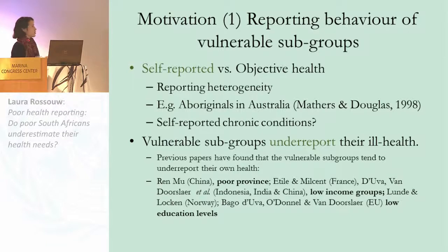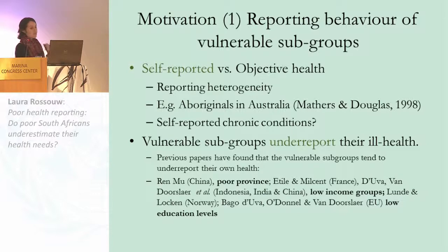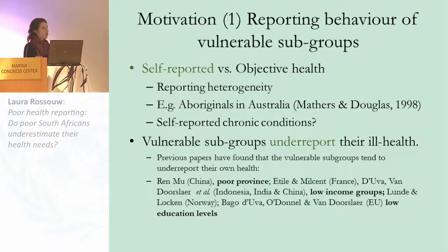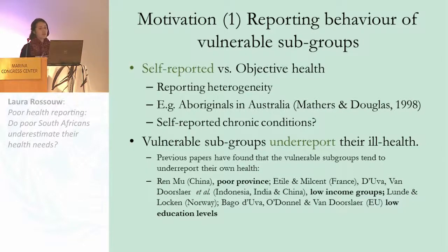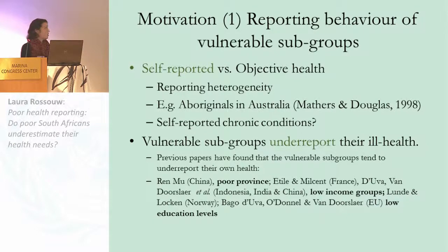This is often referred to as reporting heterogeneity. A commonly cited example is the aborigines in Australia, where self-reported health measures showed they reported having the best health in Australia, but when looking at something more objective like mortality rates, they performed the worst. There is a predictive pattern that vulnerable subgroups are likely to use a different reporting scale and to under-report their ill health — found across provinces, income groups, and different education levels.